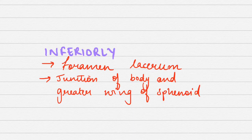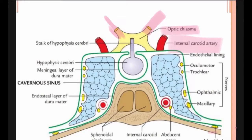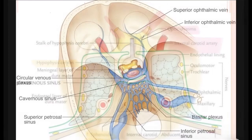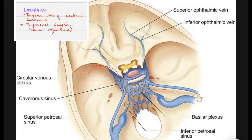Inferiorly, below the cavernous sinus, the sphenoid body and wing junction is present. And medially, towards the middle from the cavernous sinus, we have the hypophysis cerebri or the pituitary and the sphenoidal sinuses.